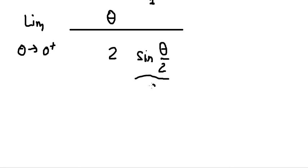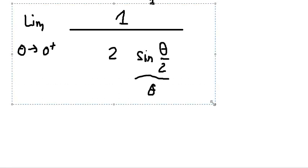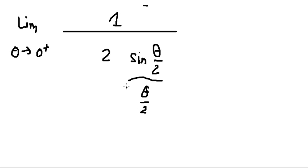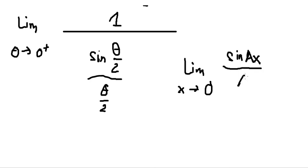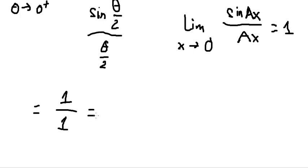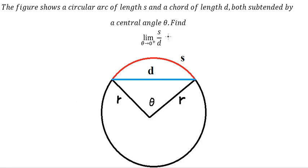The square root of 2 times square root of 2 gives 2, and the factors of one-half simplify with the 2s, which cancel. We now have the limit of h over d as theta approaches 0. Since h equals r times theta and d simplifies to r times theta as well, the ratio equals 1. The final answer is 1.